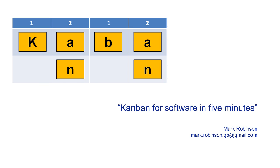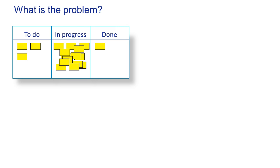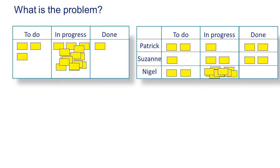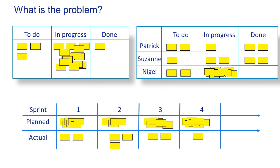I'll start by explaining what the problem was to solve. Our team had a lot of work in progress and very little was getting through to done. If you've got a lot of work in progress, the average time to complete each task will only increase. This could be for the whole team, or sometimes there were specific individuals that were causing the bottleneck. The result was that while we promised a lot for each sprint, we actually delivered a lot less.